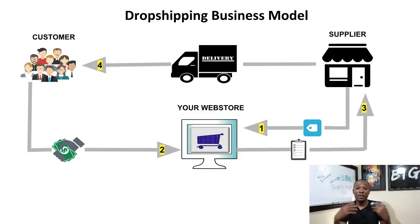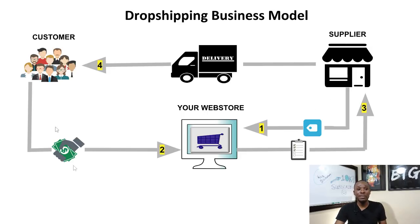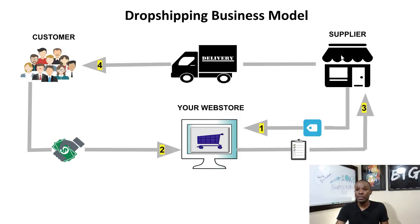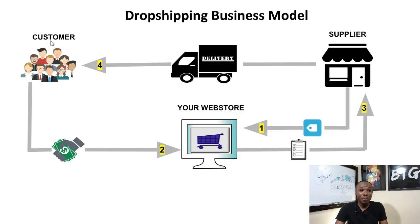That is basically how Shopify dropshipping works — whether you're doing it on Shopify or eBay, that's the model. You have a website, you list products, you send customers to your website, customers make purchases, you contact your supplier, purchase the item, and it ships directly to your customer. It's that simple. To make your business grow and make a lot of money, you just need to market — the more people you get to your website, the more sales you make.